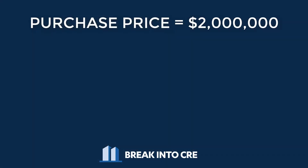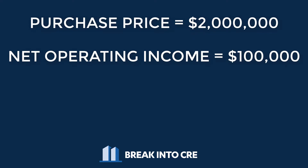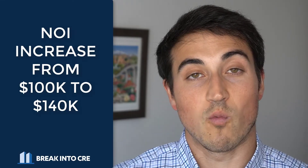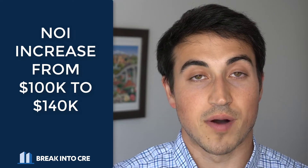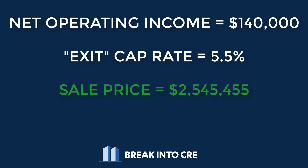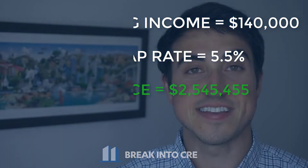In our case of the $2 million property with a $100,000 per year net operating income at a 5% cap rate, we need to make an assumption on what that cap rate will be when we actually sell the property. Let's say we sell at the end of 10 years and our net operating income has increased to $140,000 — up from $100,000 over a 10-year period. The exit cap rate determines the value, so if we said this was now going to sell at a 5.5% cap rate, that same property would now sell for a little over $2.5 million. The hardest part is figuring out what that exit cap rate should be — 5.5%, 6%, 4.5%?